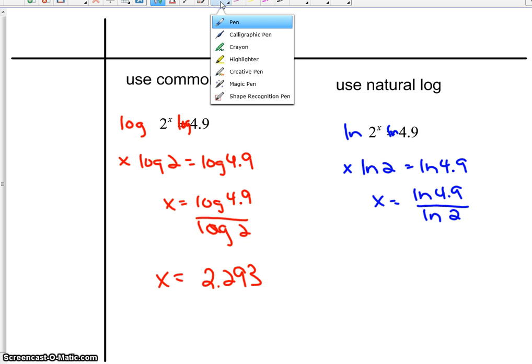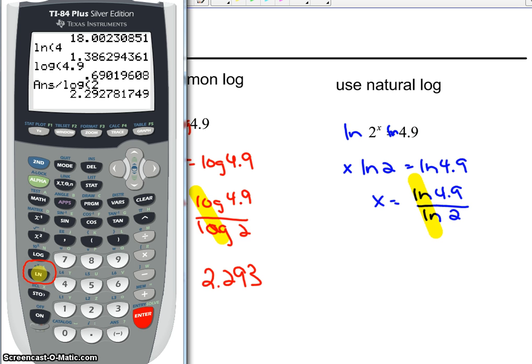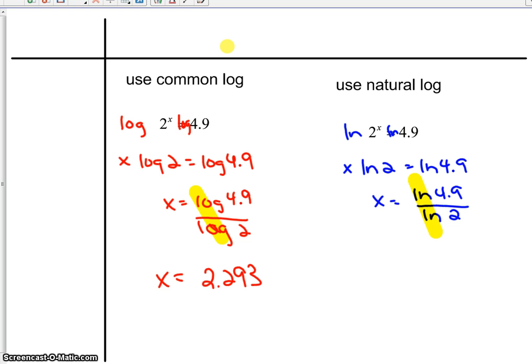The only difference here is that there's natural logs, there's logarithms. But when I type it into my calculator, natural log of 4.9, oops, I do that first.